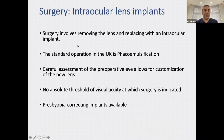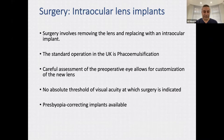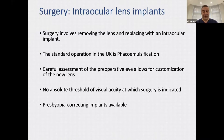In terms of the surgery, we remove the lens and replace it with an intraocular implant. The standard operation in the UK is phacoemulsification. Careful preoperative assessment allows for customisation of the new lens — it's not a one-size-fits-all model. There is no absolute threshold of visual acuity at which surgery is indicated; some people are very symptomatic even with a small cataract, while others wait longer. A useful indicator is dropping below the driving standard for vision.